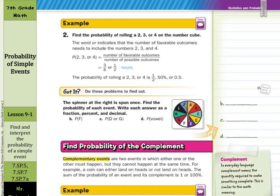In our second guided example, find the probability of rolling a two, three, or four on the number cube. Well, the word 'or' indicates that the number of favorable outcomes needs to include the numbers two, three, and four. So we're looking for the probability of two, three, or four. Our number of favorable outcomes — well, there's three of them — out of the same possible outcomes, six. So three out of six, which simplifies to one-half, which again is fifty percent or five-tenths.